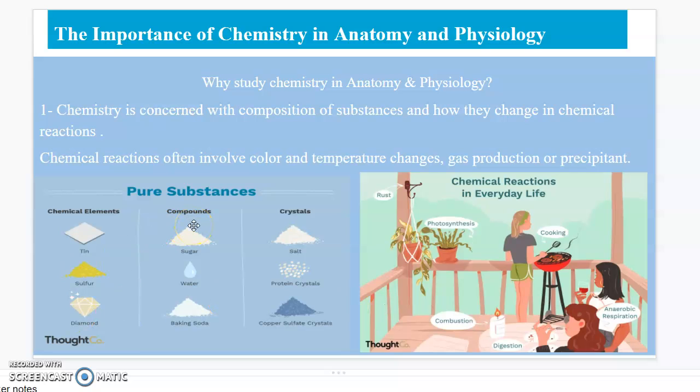Pure substances. This is one example of chemical elements used in chemical reactions. Compounds such as sugar, water, baking soda, crystals, salt, proteins, copper, sulfur crystals. A simple example of everyday reactions could be dehydration, anaerobic respiration, cooking, combustion, photosynthesis, and rust.